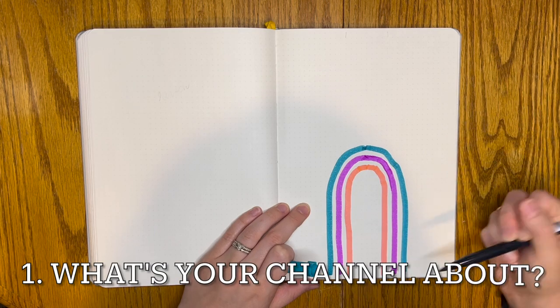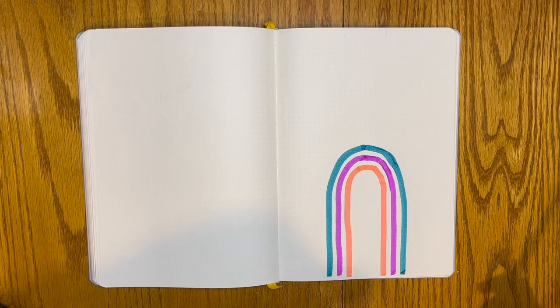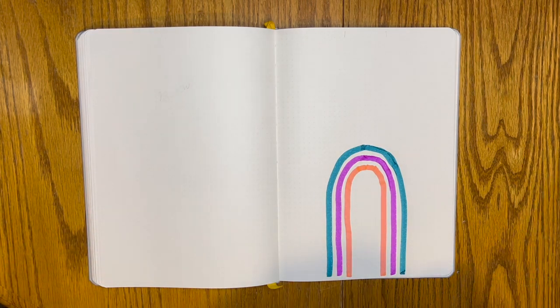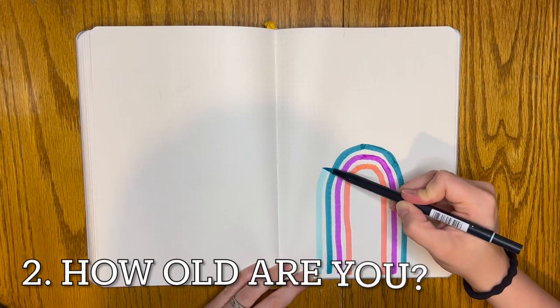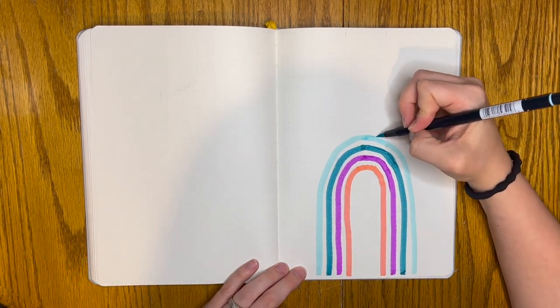Question number one, what's your channel about? It pretty much says what my channel is about in the title, but it is about me, Becca, books, and bullet journals. Question number two, how old are you? I am 26 years old, and I will be turning 27 in the month of July.